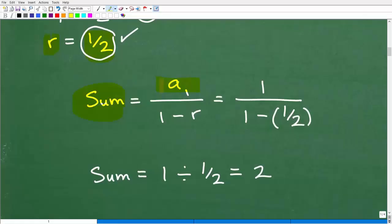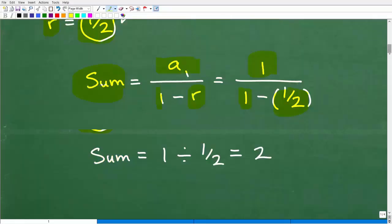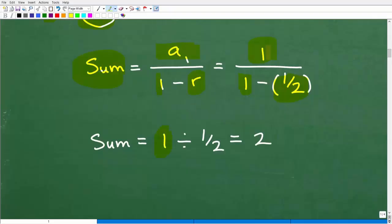The sum of that infinite geometric series, we take our first term. Our first term is 1, and that's going to be 1 minus the common ratio, which is 1 half. 1 minus 1 half, it's just simple basic mathematics. This is going to be 1 divided by 1 minus 1 half is 1 half, and that's going to be 1 times 2 over 1, or 2. That is the answer.